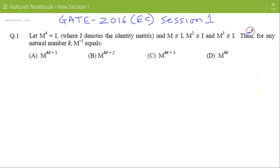This question was asked in GATE 2016 Electronics and Communication Session 1. The question is: M to the power 4 equals I, where I is the identity matrix, M is not equal to I, M squared is also not equal to I, M cubed is again not equal to I.